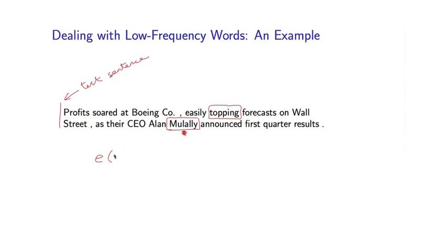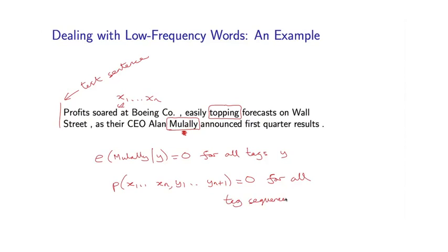So e of Mulally given y is equal to 0 for all tags y. And that means if this is defined in our sequence x1 through xn is equal to this, it's easily verified that p of x1, xn, y1 through yn plus 1, is equal to 0 for all tag sequences y1 to yn plus 1. And that's because any tag sequence is going to involve an emission parameter like this which is equal to 0. And so all of these probabilities are going to be taken to be 0.